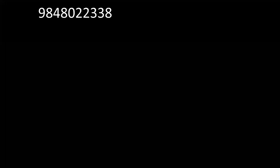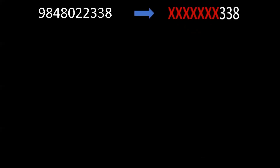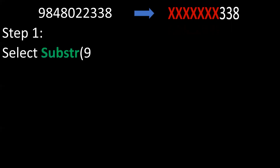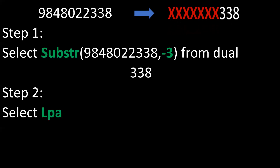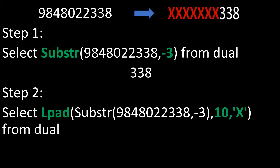Now we'll see how to mask a phone number. A phone number is a 10-digit number. We need to display only the last three digits and the rest need to be displayed as 'X'. Step one: we need to extract the last three digits using substring. Next, we pad the rest of the string with 'X' by using LPAD, and we can achieve the result.